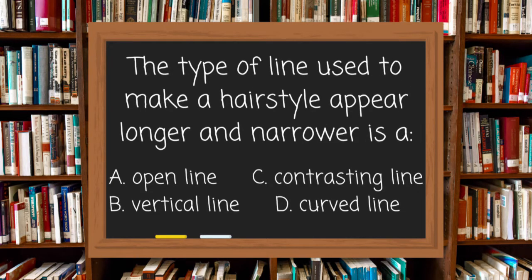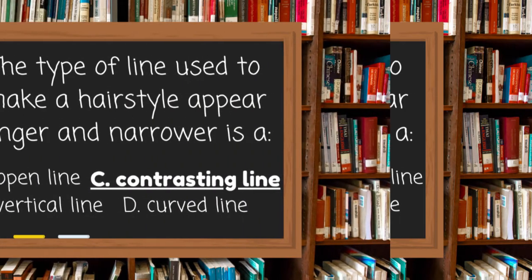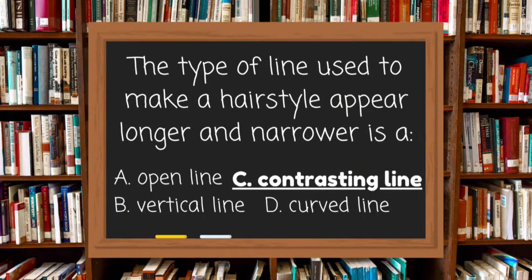The type of line used to make a hairstyle appear long and narrower is: A. Open line, B. Vertical line, C. Contrast line, or D. Curved line. The answer is C, contrasting line.